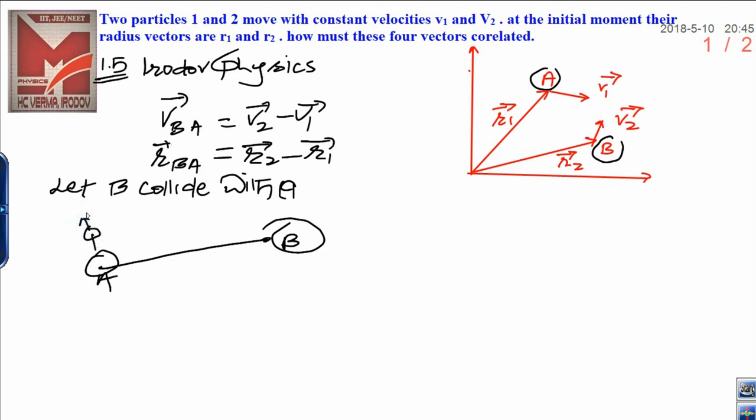Let this be the velocity of B with respect to A. I mean to say velocity of B observed by A, when observer is sitting over A and observing B, its velocity is vBA.